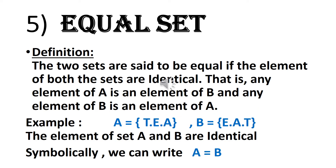Equal sets: Two sets are said to be equal if the elements of both sets are identical. That is, any element of A is an element of B and any element of B is an element of A. Example: A = {T, E, A} and B = {E, A, T} — the elements of set A and B are identical, so symbolically we write A = B.